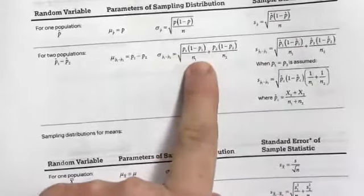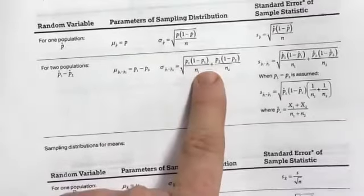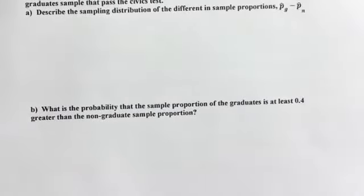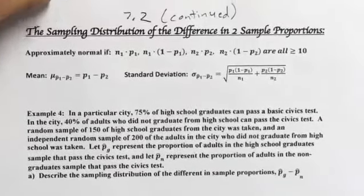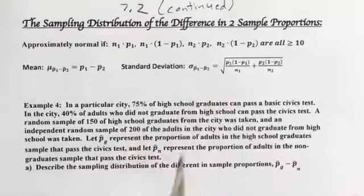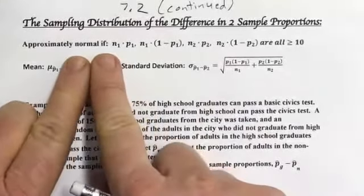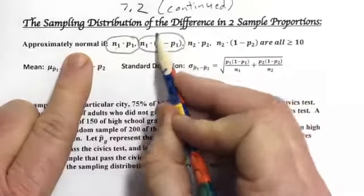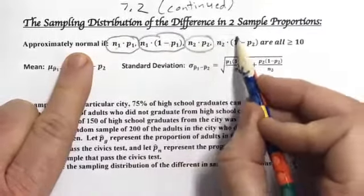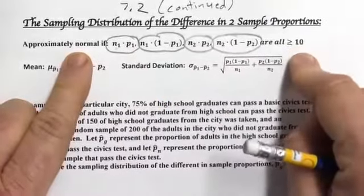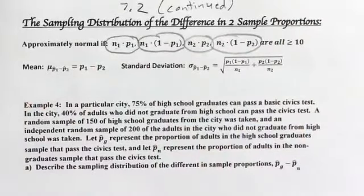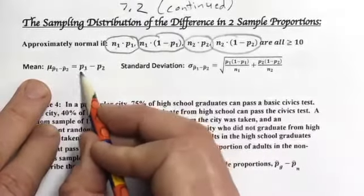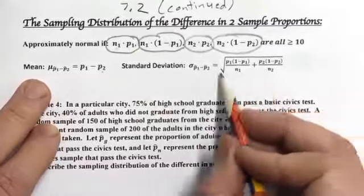Looking at our note sheet: for the sampling distribution of the difference in two proportions, normality requires all four quantities — n times P and n times (1 minus P) for each sample — to be greater than 10. If any one is less than 10, you don't have normality. The mean is simply the difference of the two population proportions, and the standard deviation formula is the one we just derived.